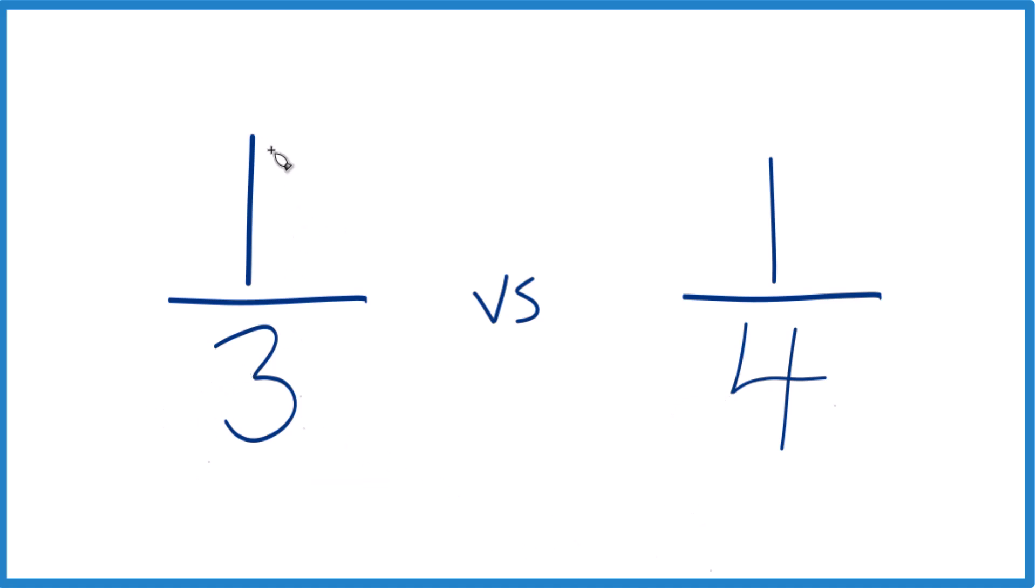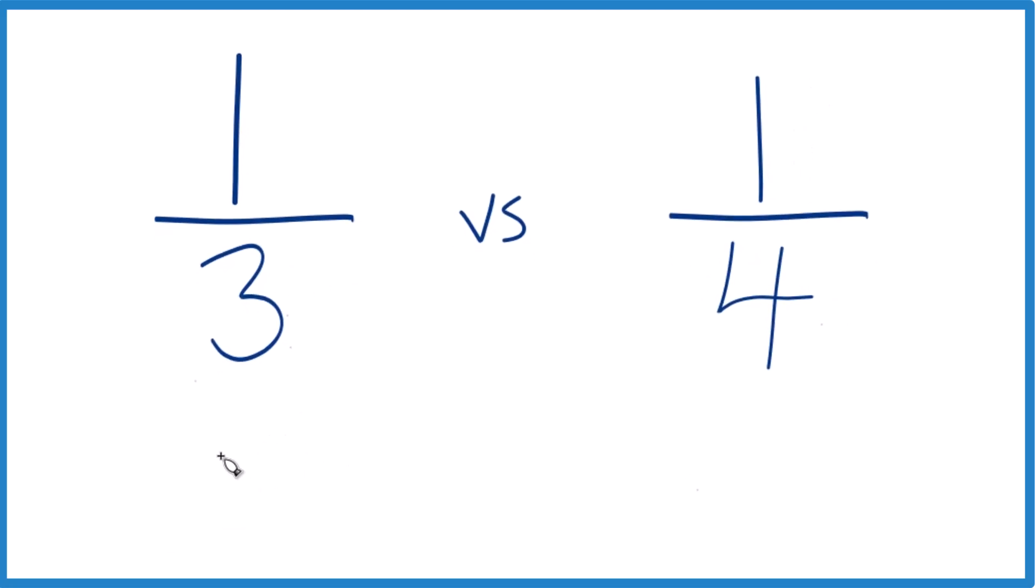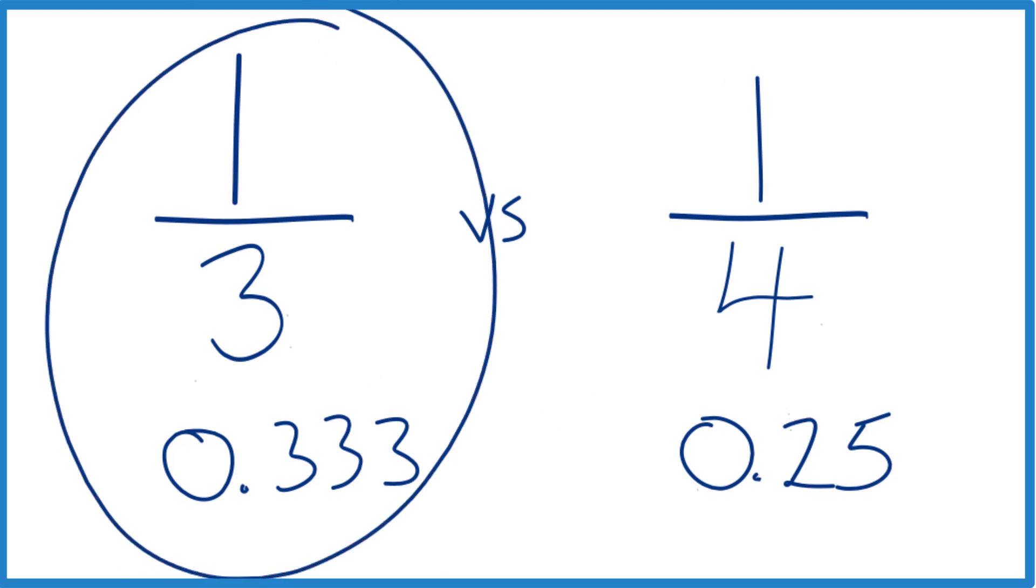So you could divide one by three on a calculator and one by four on a calculator. You'd end up with 0.333, that keeps repeating, and then for one-fourth you get 0.25. And you can see that one-third of a cup, that's larger than one-fourth of a cup.